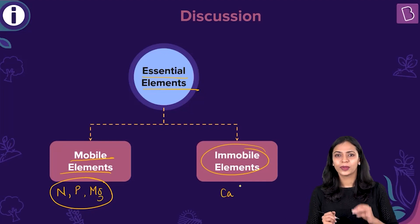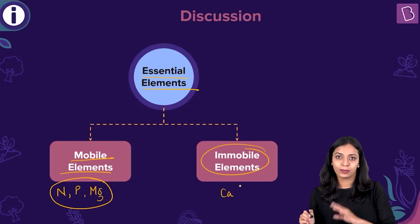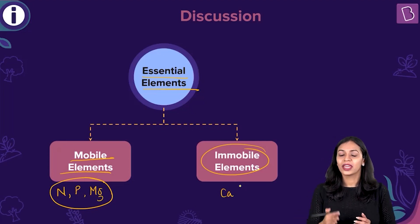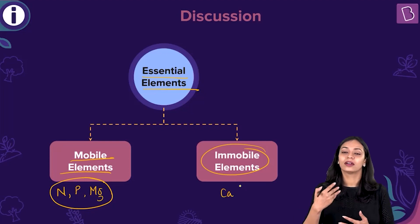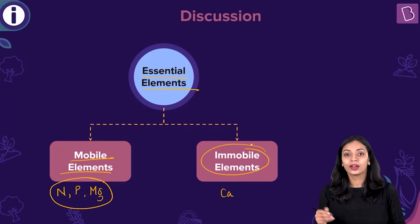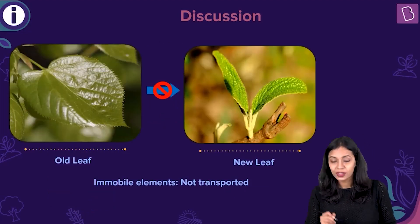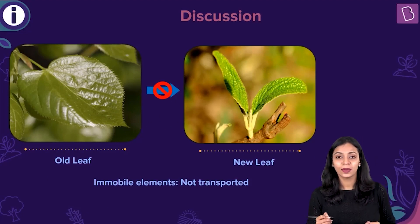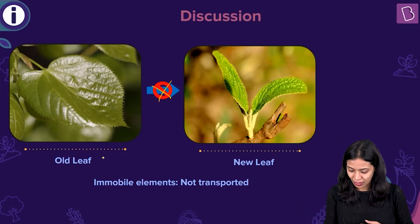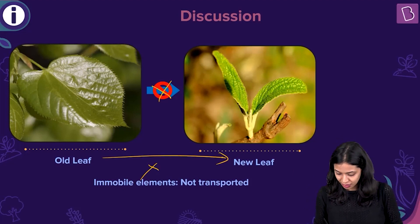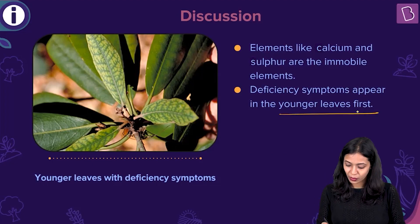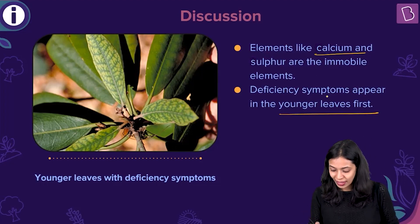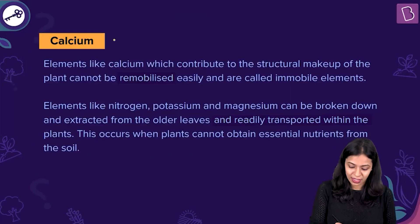Calcium is considered to be an immobile element because it is not easily mobilized from one part of the plant to another. Calcium is part of the structural framework of the plant — specifically, calcium pectate in the cell wall. When the soil is deficient in calcium, the calcium present in older tissues cannot be remobilized into younger tissues, so deficiency symptoms will first appear in younger leaves. Elements like calcium and sulfur are immobile elements, and their deficiency symptoms appear first in younger leaves.